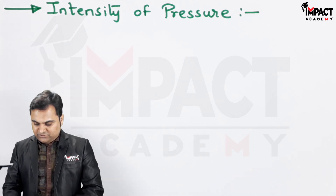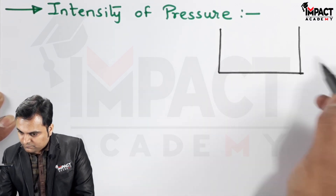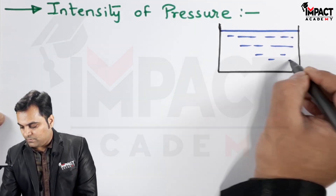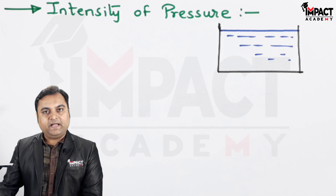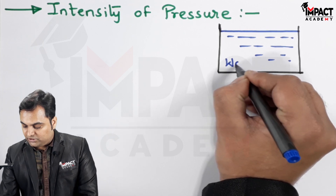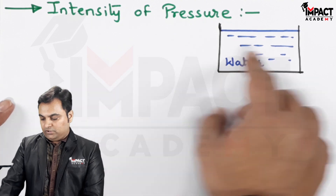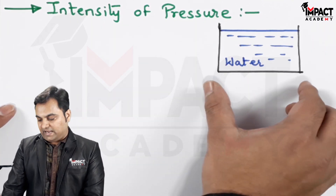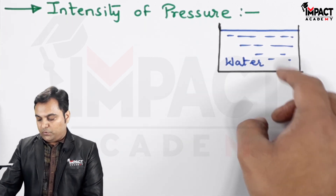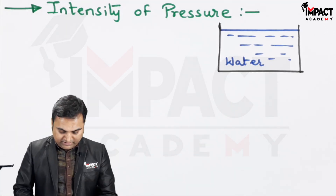I am taking an example, just drawing a diagram here. There is a tank which is an open tank containing a liquid which is static. Suppose the liquid is water. Intensity of pressure would be the weight of the water acting at the base. This base has some area, so weight upon area is called the intensity of pressure, also called force upon area.